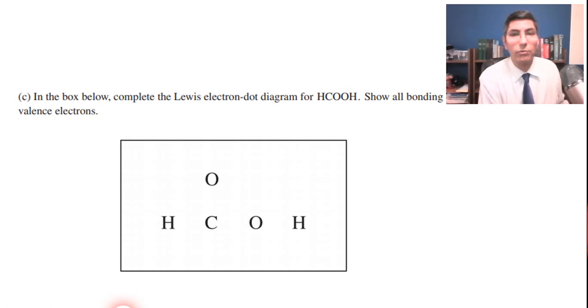Let's move on to part C. In the box below, complete the Lewis electron diagram, electron dot diagram for methanoic acid. Show all the bonding and non-bonding valence electrons. So I always like to start with the outside and work my way in. Hydrogen has one dot so we'll have one dot for that hydrogen there. And this hydrogen will get one dot as well. The oxygen here is going to have six. It's in group 16, so six valence electrons. So there's one, two, three, four, five, and six.